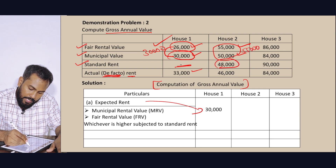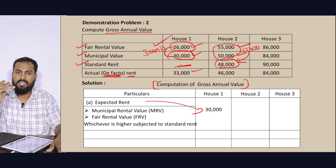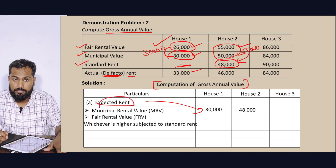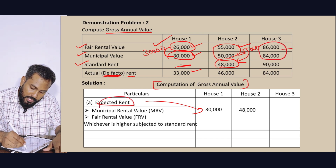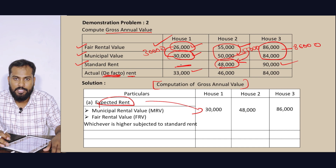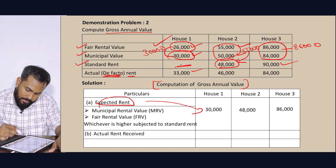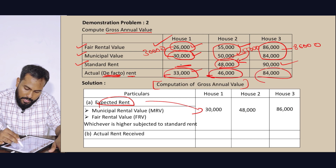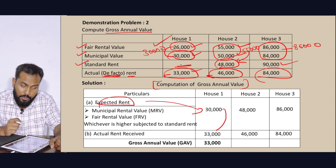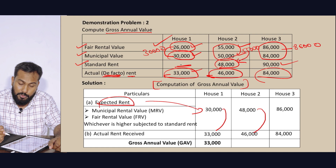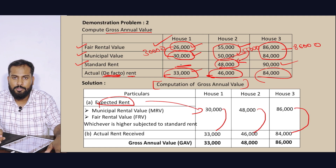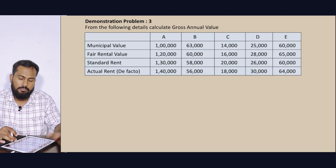Standard Rent: 48,000 — we can limit it. Standard Rent: 48,000. Then Expected Rent: 48,000. House 3: 86,000 and 84,000 — whichever is higher: 86,000. But Standard Rent — we can't limit it, so Expected Rent: 86,000. Actual rents: 33,000, 46,000, 84,000. Gross Annual Value: 33,000, 48,000, 86,000.